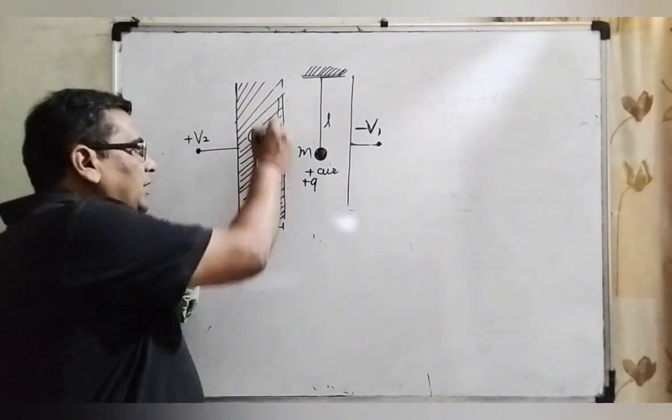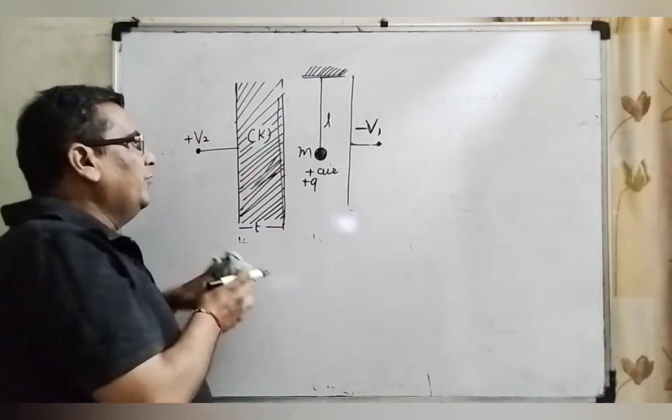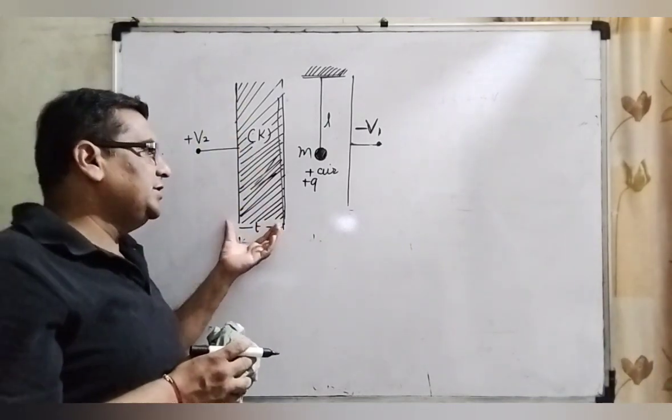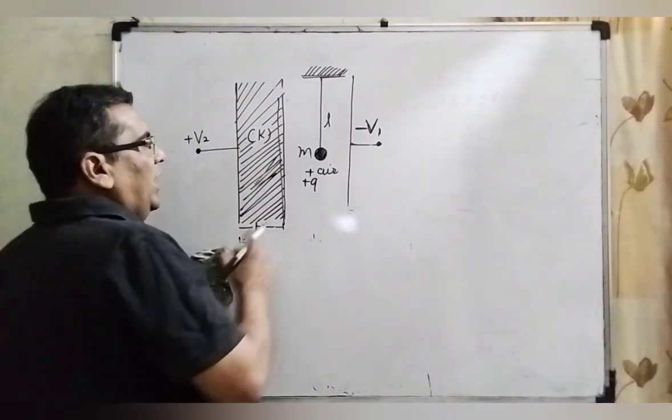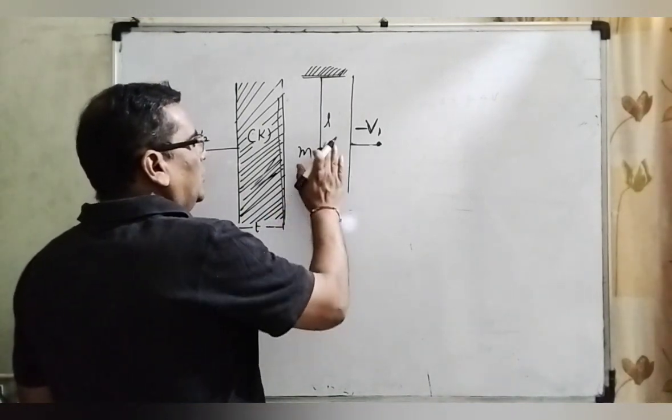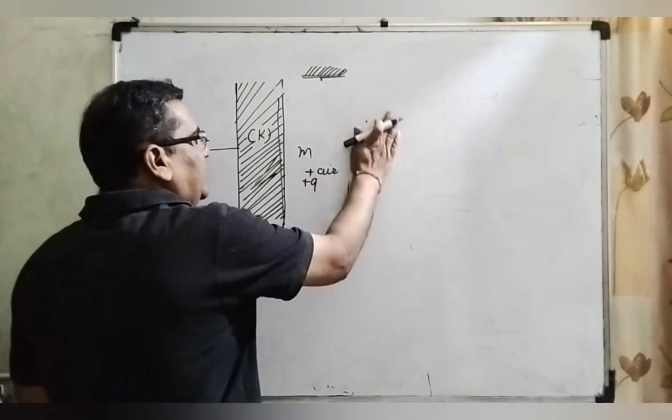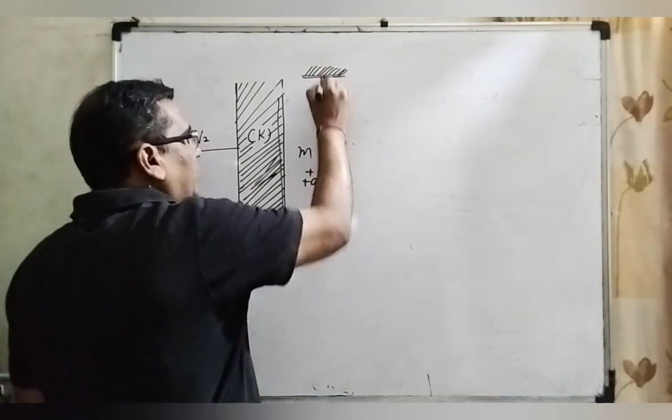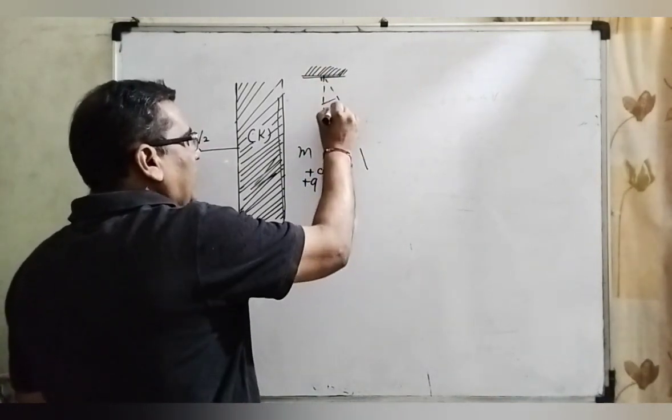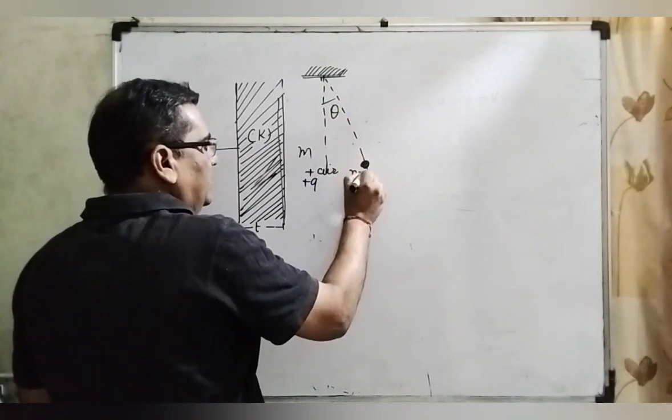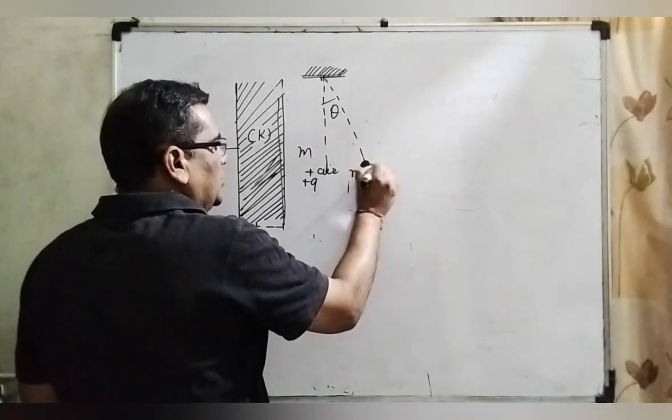But first part, some part is filled with dielectric constant K, and its width is D. Here, find out the deviation. So let's see, it's deflected from their original position by theta angle. Its mass is M and its charge is Q.